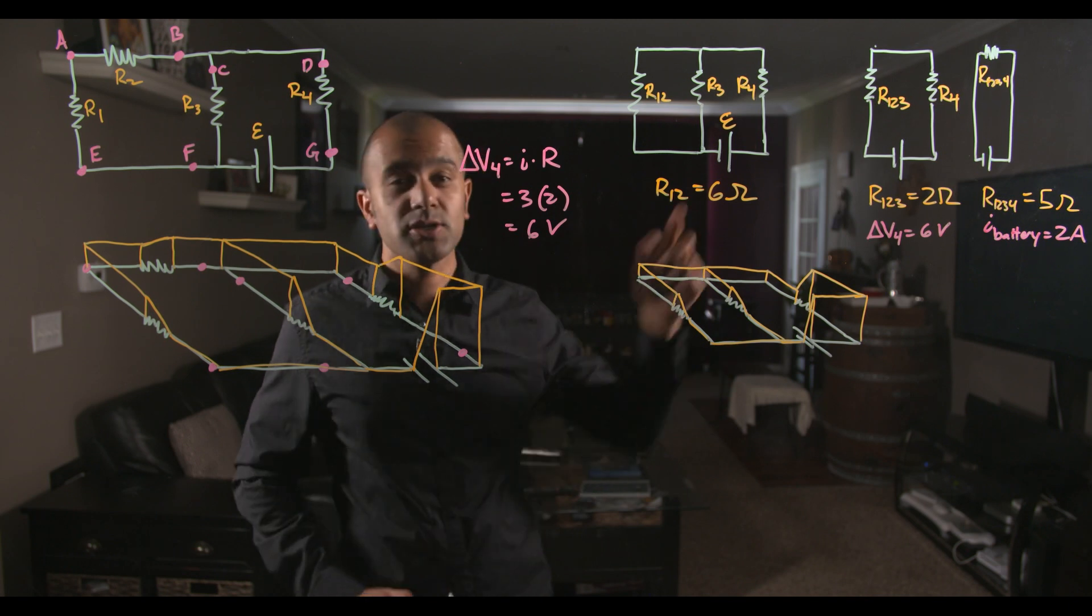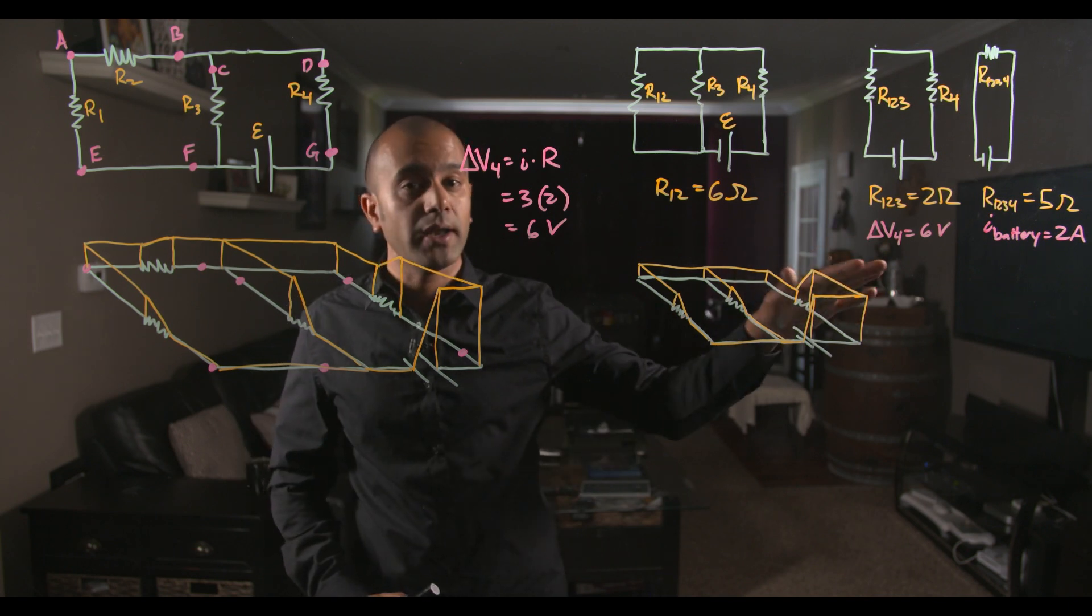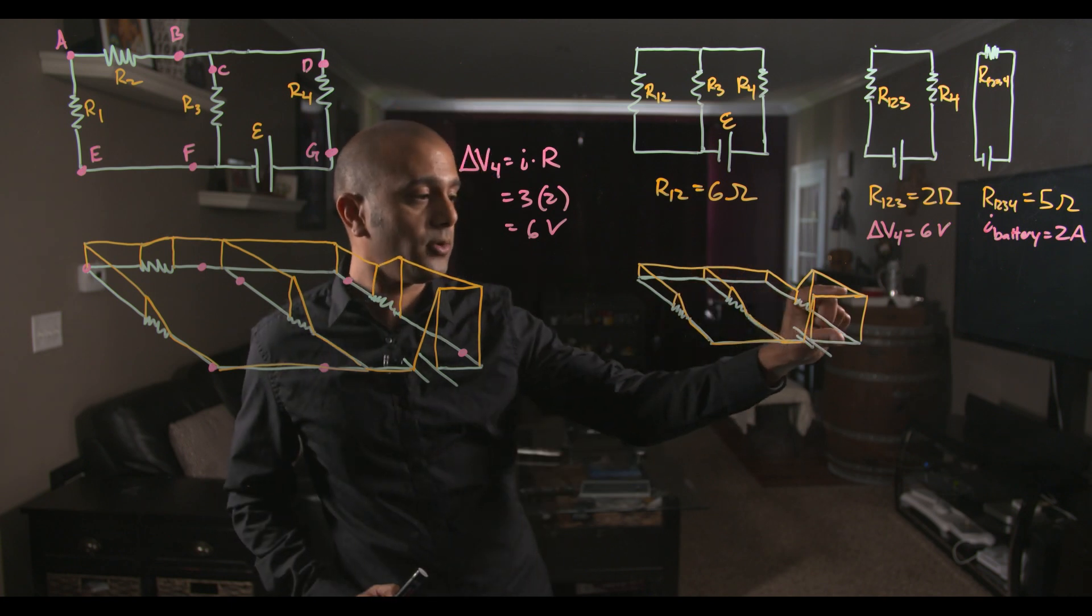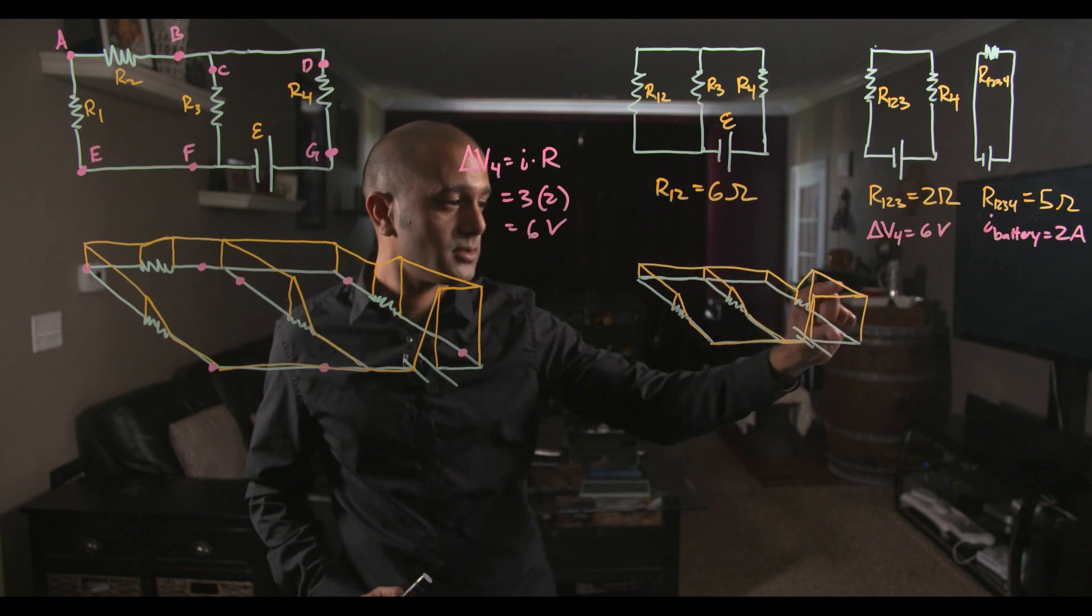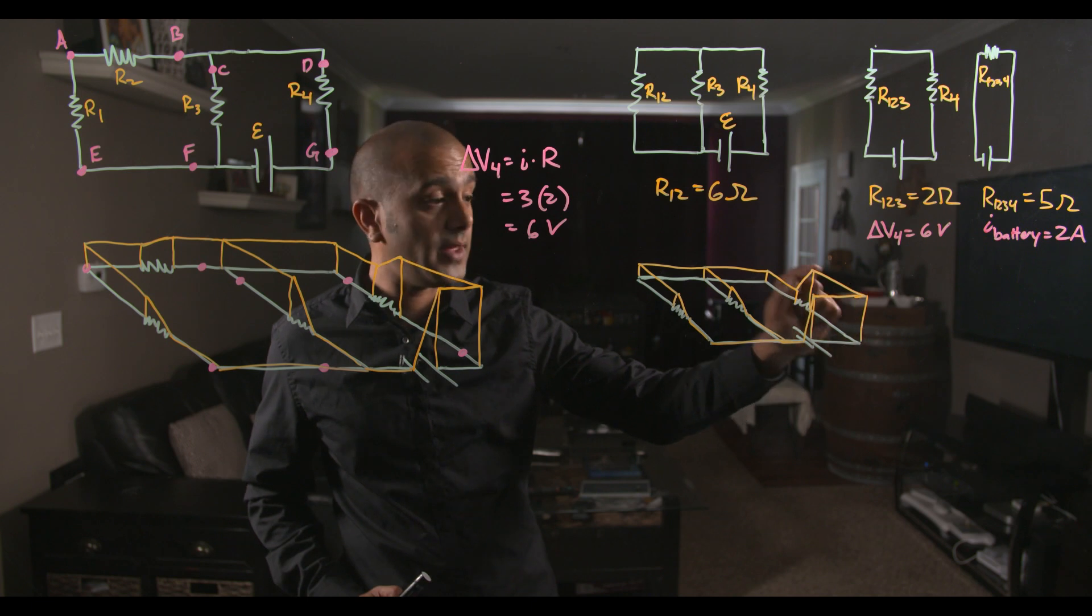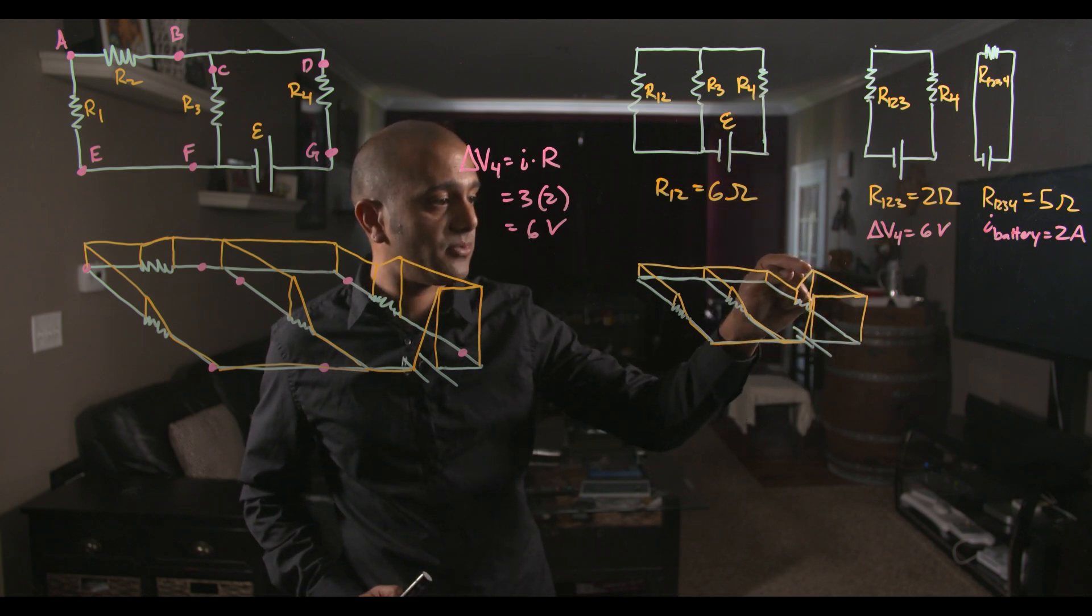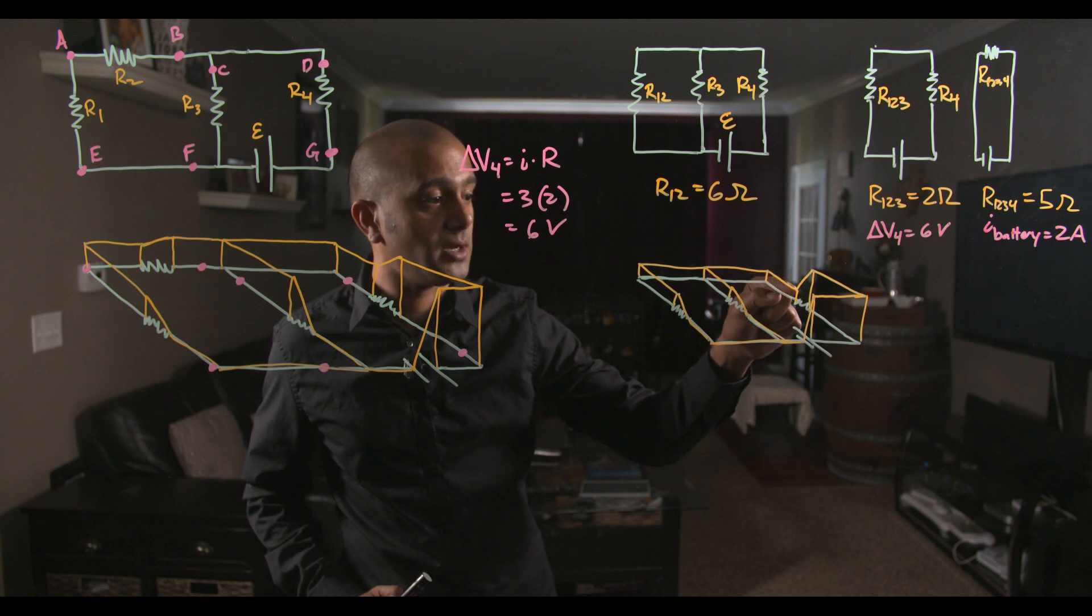And the nice thing about our voltage map is we can actually use this quantity to immediately find out what the voltage drop is across another resistor. We have a 10 volt difference here. So the battery is 10 volts. So you have 10 volts here. And then at that resistor, you drop by 6 volts. This is resistor 4. So you drop from 10, you drop by 6 volts down to 4.